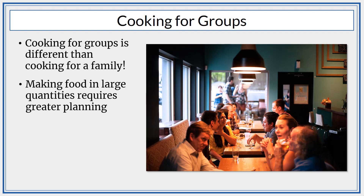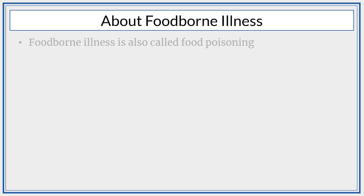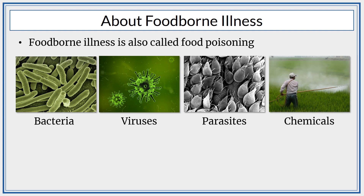So there is a greater need for coordinators, employees, and volunteers to know how to safely prepare food to prevent a foodborne illness. Foodborne illness is also called food poisoning. It is an infection caused by eating foods or beverages contaminated with harmful bacteria, viruses, parasites, or chemicals.